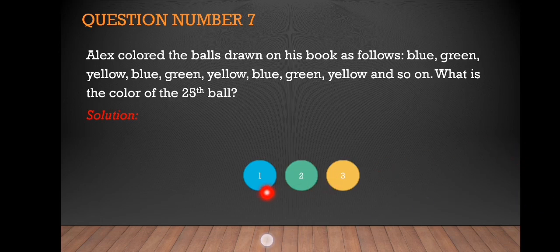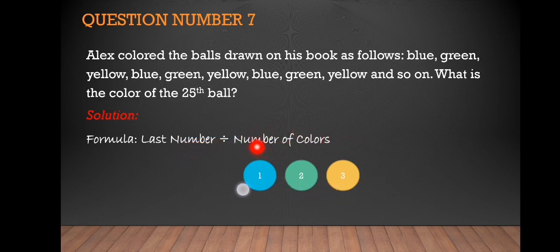So the formula we're going to use is: last number divided by the number of colors. The last number we have is the 25th ball, so 25 divided by the number of colors, which is one, two, and three. We have three colors.